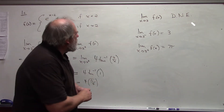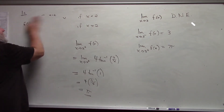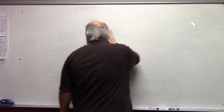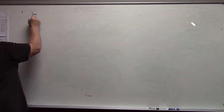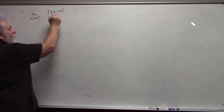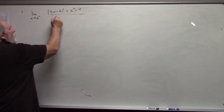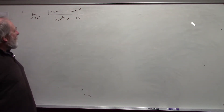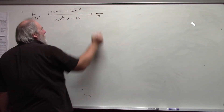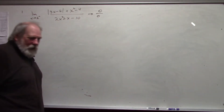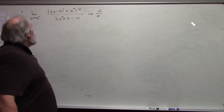My second example involves functions we haven't used much yet — I'm going to do an example involving an absolute value. Let's consider the limit as x approaches 2 from the left of the absolute value of 3x minus 6 plus x squared minus 4, all over 2x squared plus x minus 10. In this case, both the numerator and denominator are approaching 0, so this is indeterminate. I have to do some algebra before I can evaluate the limit, which means I need to know what happens to the absolute value of 3x minus 6 as x approaches 2 from the left.